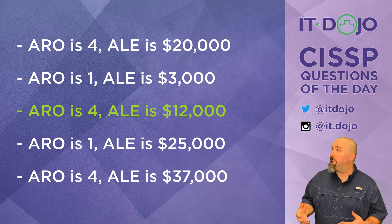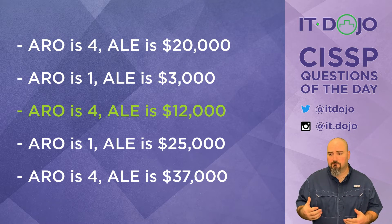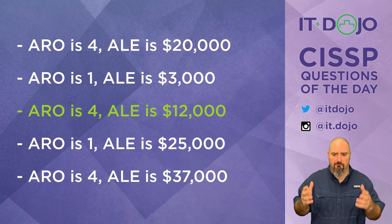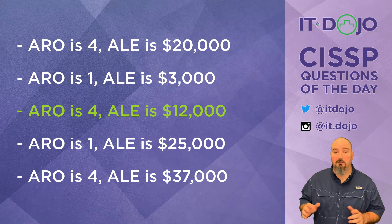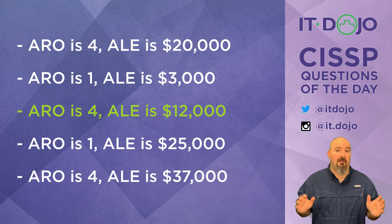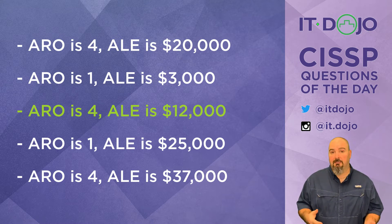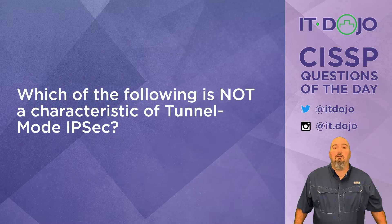None of the other values matter in this example. If we got more involved in this with details that we don't have, then we could probably go other places with it. But the question just asks you to specify what the ARO is and what the ALE is. So that's them.